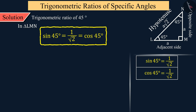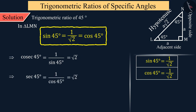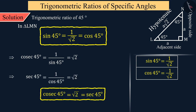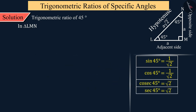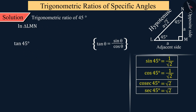Note that the values of sine 45 degrees and cos 45 degrees are the same, which means their inverse values — cosec 45 degrees and sec 45 degrees — will also be the same. For tan 45 degrees, since tan theta equals sine theta upon cos theta, and both sine and cos 45 degrees are equal, their ratio gives tan 45 degrees as 1.